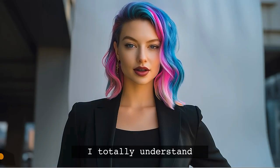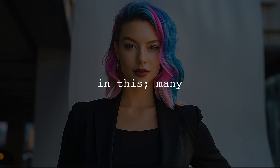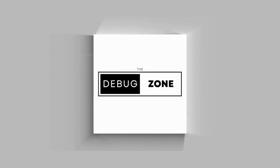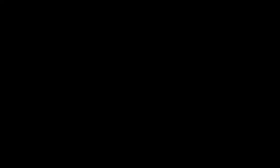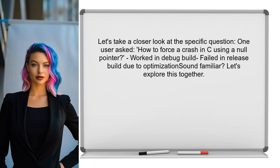Writing a test runner that can accurately detect crashes is no small feat. Many developers face similar challenges when trying to ensure their code behaves as expected. One user asked how to force a crash in their test runner using C, particularly by dereferencing a null pointer. They found that while it worked in a debug build, it failed in a release build due to optimization.